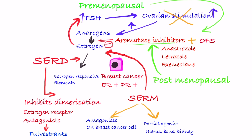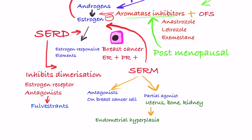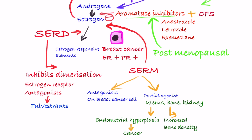SERMs can have agonist action on some tissues like the uterus, bone, and pituitary, just like estrogen. Uterine stimulation leads to an important side effect of endometrial hyperplasia, which can also lead to endometrial cancer, since increased proliferation leads to more mutations and more chances of cancer. However, agonist action on bones leads to the beneficial effect of increased bone density. Examples of SERMs are tamoxifen and raloxifene.